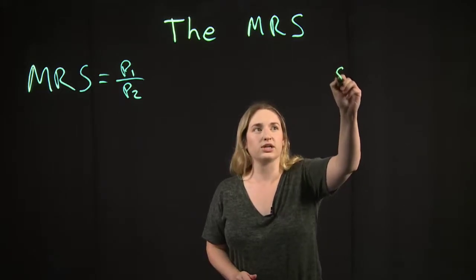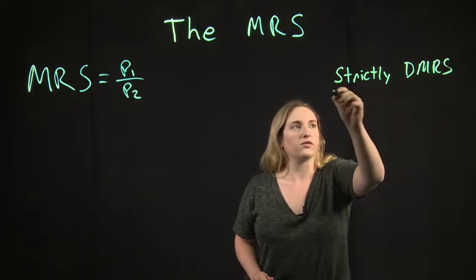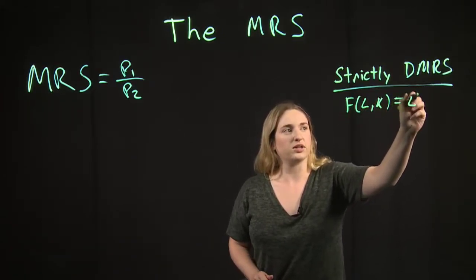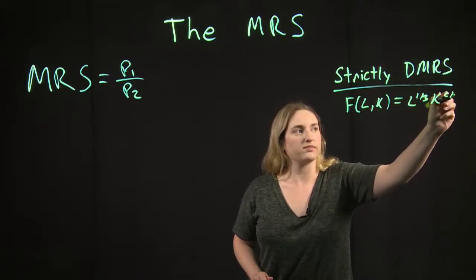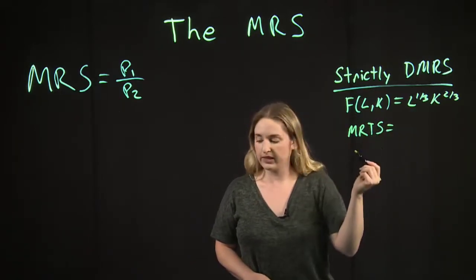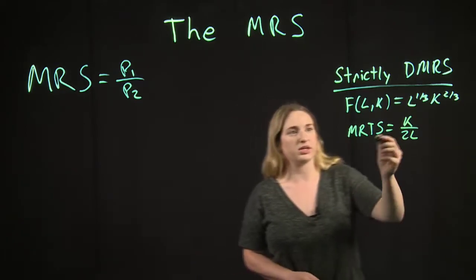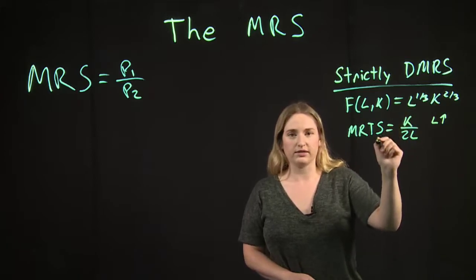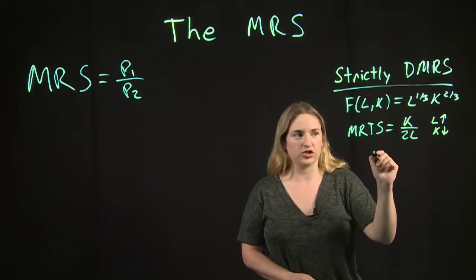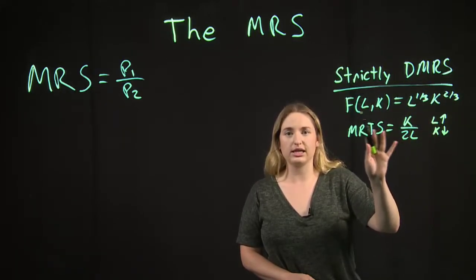So the first one would be when we have a strictly diminishing marginal rate of substitution. So for example, let's say we had the production function F(L,K) equals L to the one-third K to the two-thirds. In this case it's technically called the marginal rate of technical substitution because we're talking about a production function, but that would be K over 2L. So this is strictly diminishing because as L increases the marginal rate of technical substitution would go down, and as K decreases the marginal rate of technical substitution goes down. So this is the case of a strictly diminishing marginal rate of substitution where we're guaranteed a unique interior optimum.